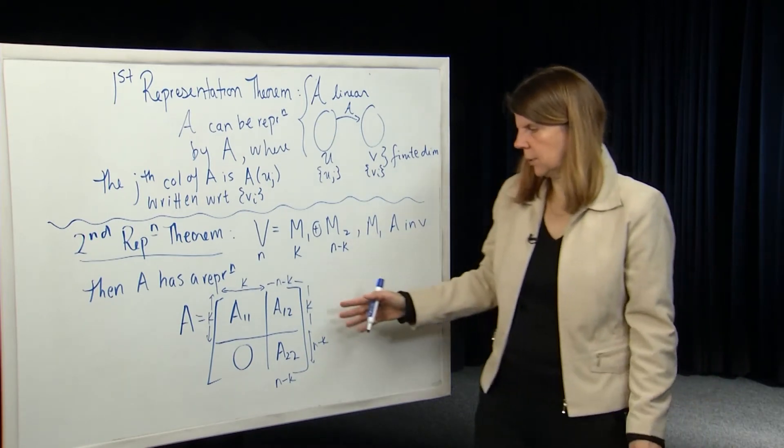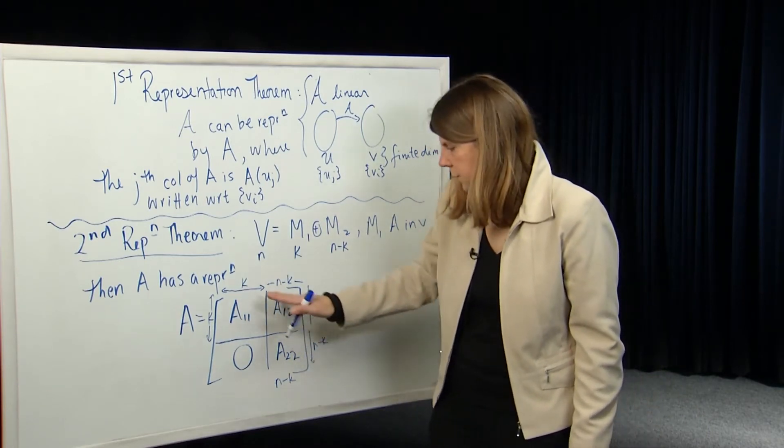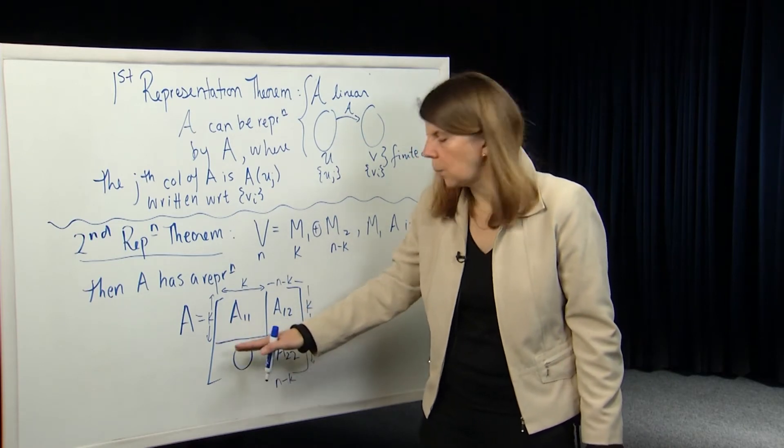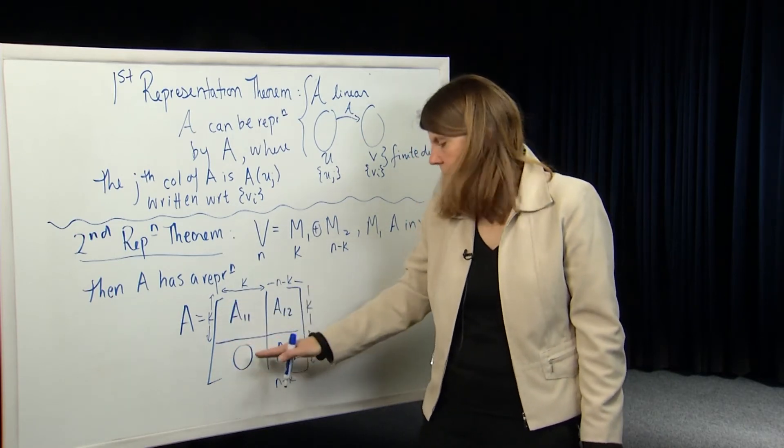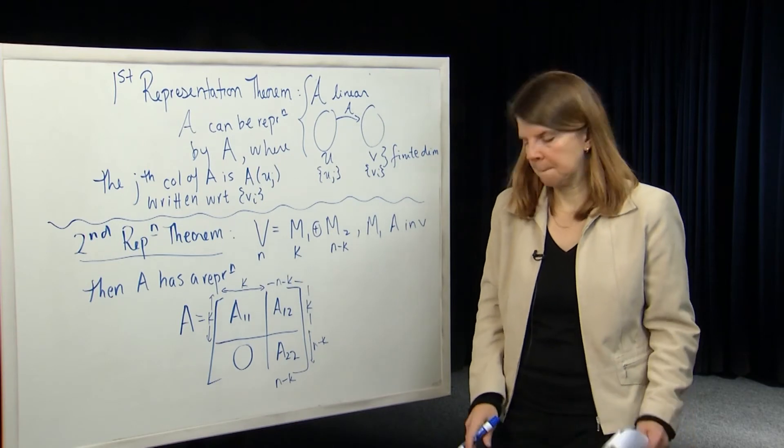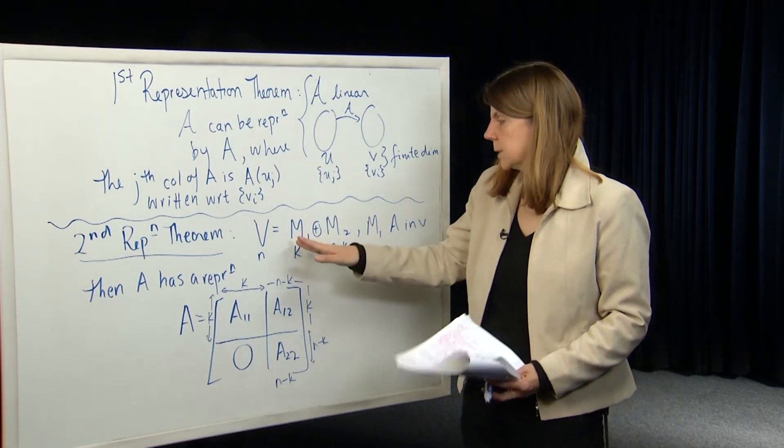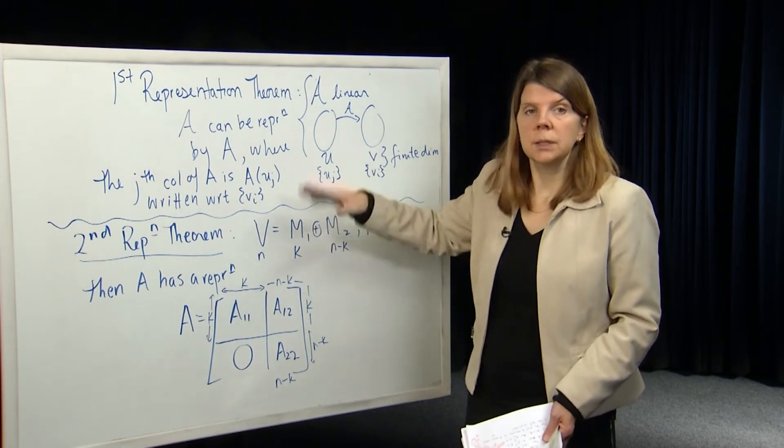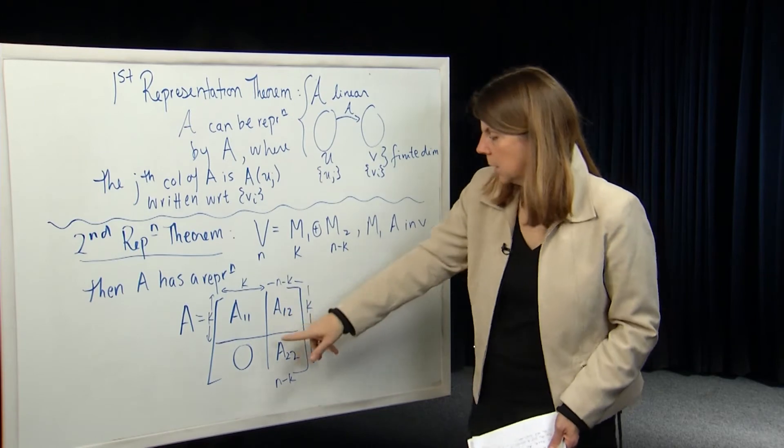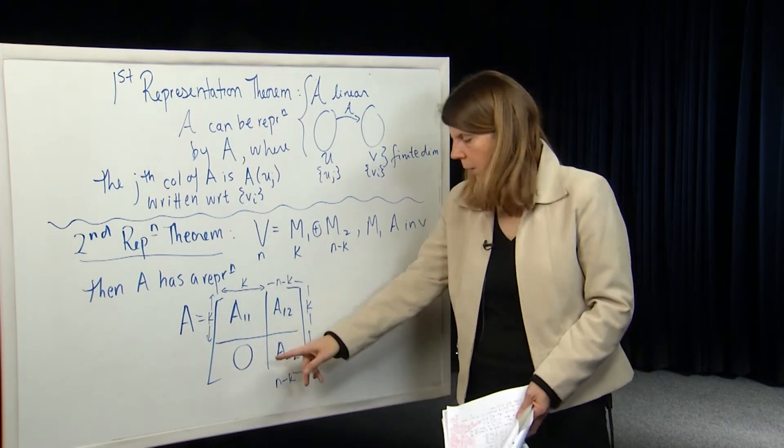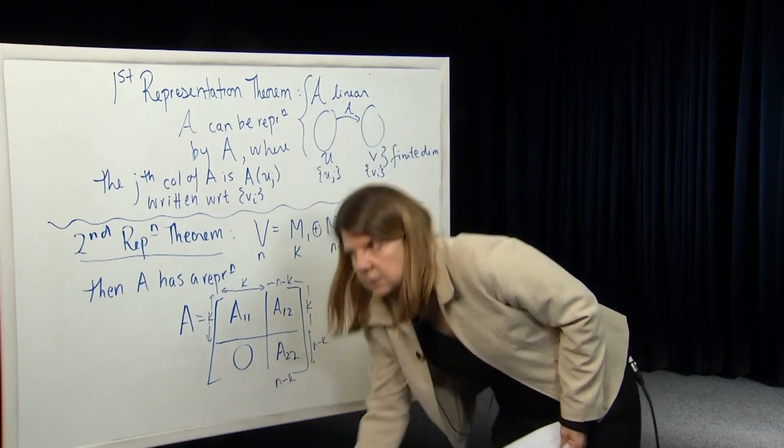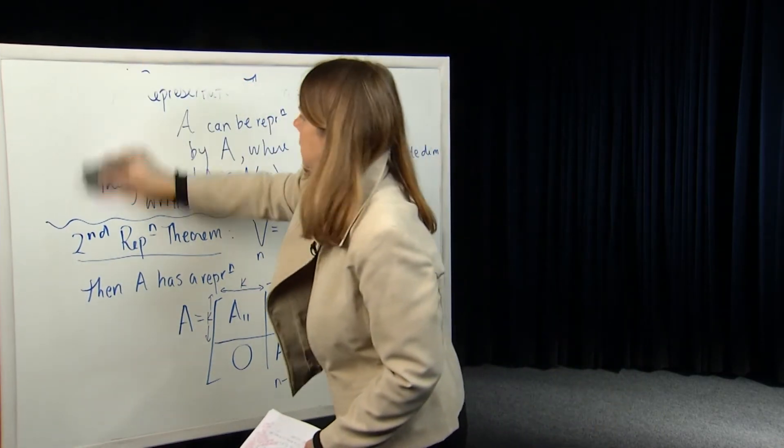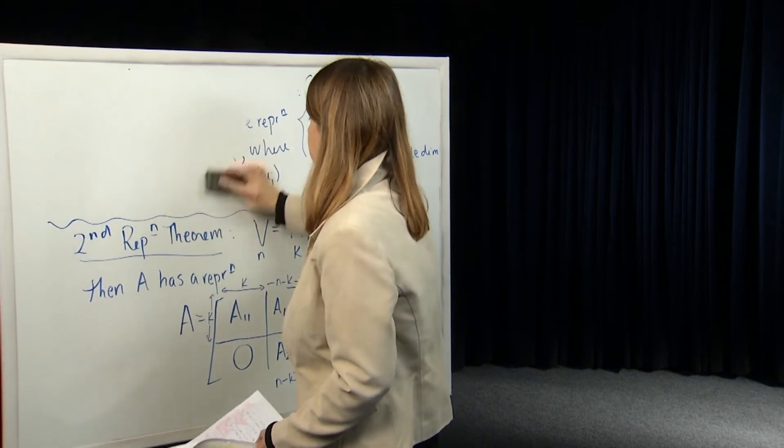So why is that true? When we're proving the second representation theorem, we're saying in general, these can be just general non-zero elements. But why is this matrix down here? Why can you construct an A such that there's a zero matrix down here? And basically we can construct it, we can prove this by constructing a basis for M1 and M2, and then using the first representation theorem to show why these elements down here are all going to be zero. And that's a fairly straightforward proof given that we're comfortable with the first representation theorem.